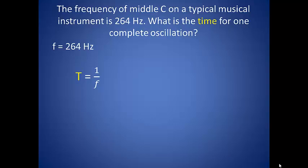So the frequency of a middle C on a typical musical instrument is 264 hertz. What is the time for one complete oscillation? So this is the reverse of what we just did a minute ago. When asking for time, we really are looking for the period of the wave. Since we are given the frequency, we can take its inverse to find 3.79 times 10 to the negative third seconds.